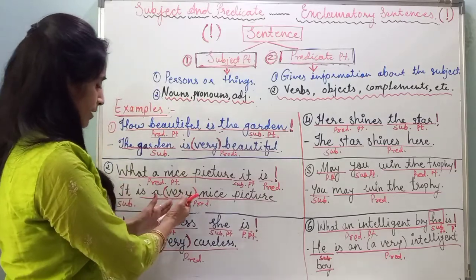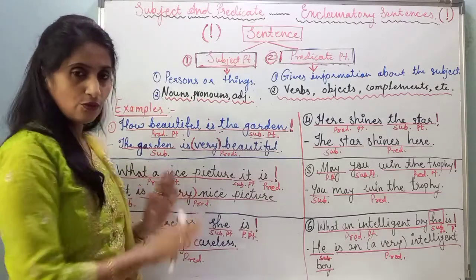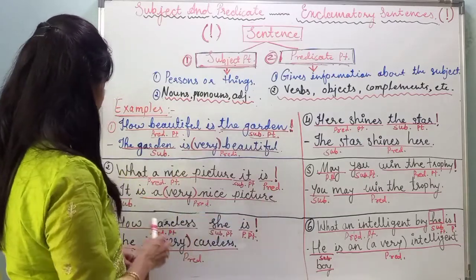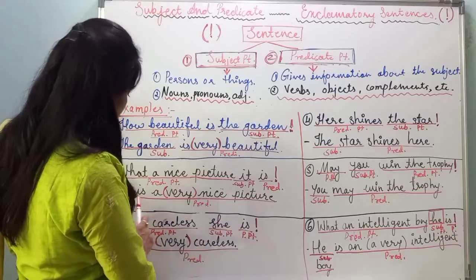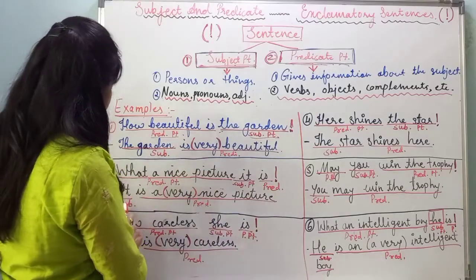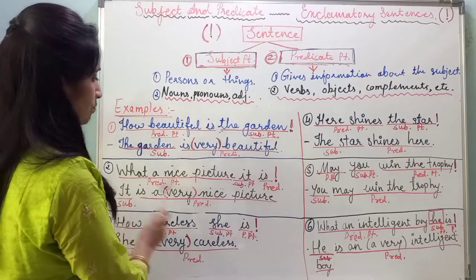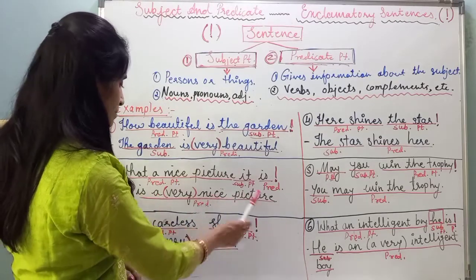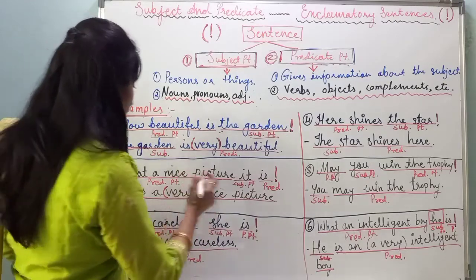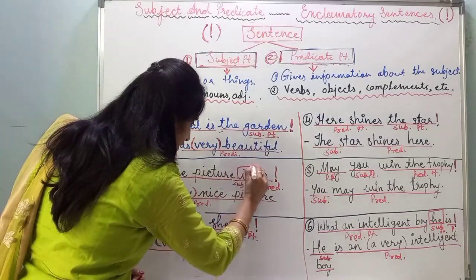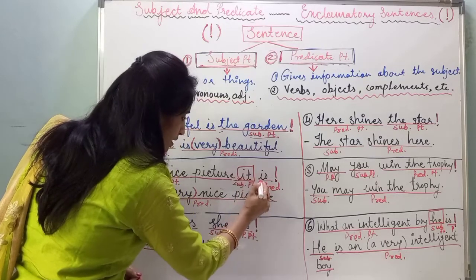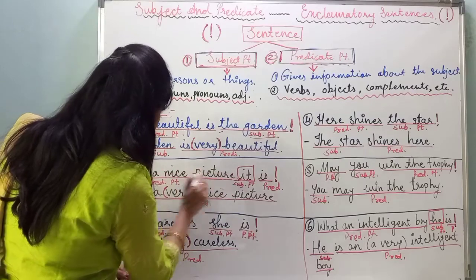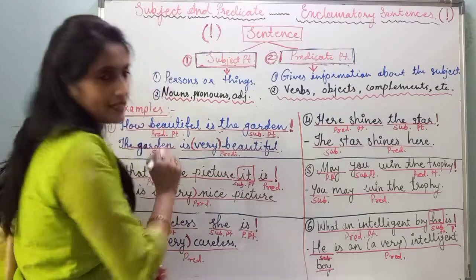If you want, you can make use of 'very'; if you don't want, don't use it. In the converted sentence 'It is a nice picture,' you can easily understand that 'it' is the subject part and 'is a nice picture' is the predicate part. In the same way, in the original sentence, 'what a nice picture' is also the predicate part.